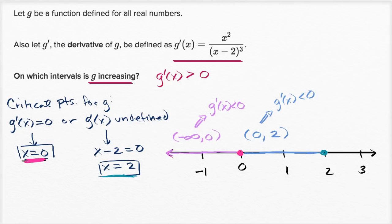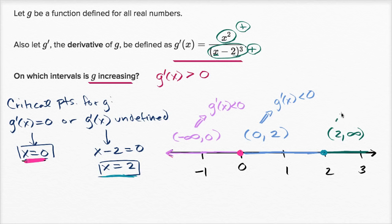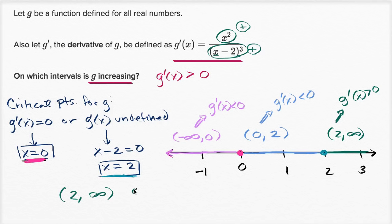Finally, let's take the interval from two to infinity. The numerator is positive, and for x greater than two, x minus two is positive, so the denominator raised to the third power is also positive. So g prime of x is greater than zero on this interval. Therefore, g is increasing on the interval from two to infinity, or equivalently where x is greater than two.